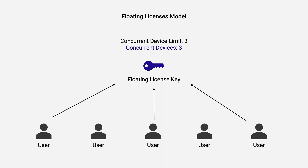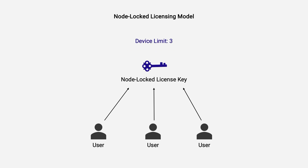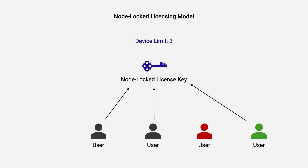So how does that differ from a node-locked license key? Well, when one user exits the application, a floating license key would allow another employee in, since floating licenses only count the number of concurrent machines. Node-locked licenses are instead locked to specific machines, meaning that the license key can only be activated by three machines in this example. You would need to deactivate one machine before another employee can access the application with that node-locked license key.